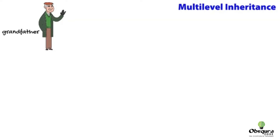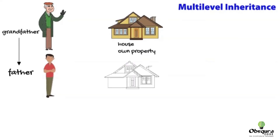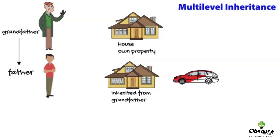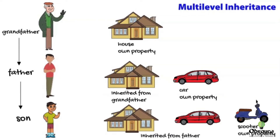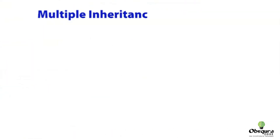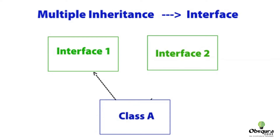We also have multi-level inheritance, where you could reuse the properties which your father has inherited from your grandfather. As shown in the example, you're now eligible to reuse all the properties of both your father's and grandfather's class. We also have multiple inheritance, which can be achieved with the help of interfaces using the implements keyword.